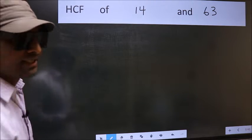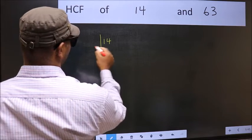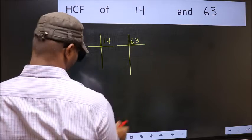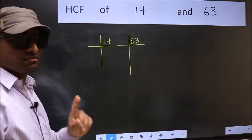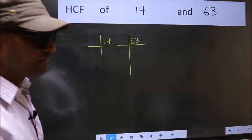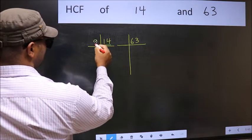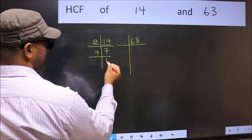What I mean is 14 and 63. This is your step 1. Here we have 14. 14 is 2 times 7. 7 is a prime number, so 7 times 1 is 7. Now the other number.